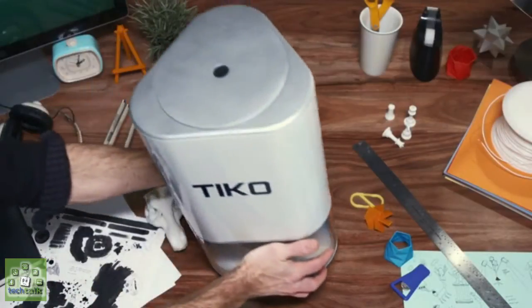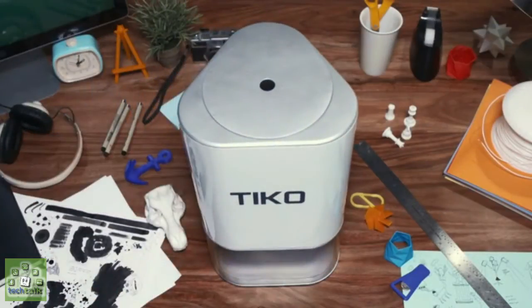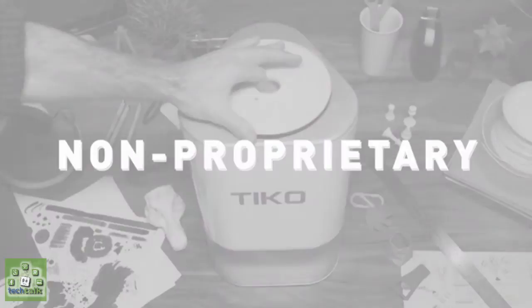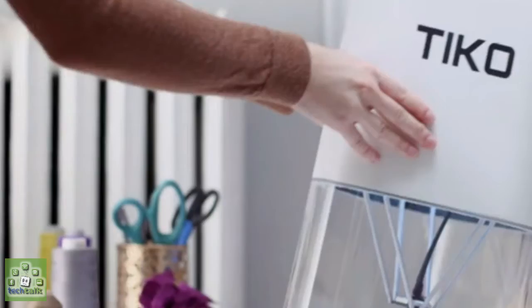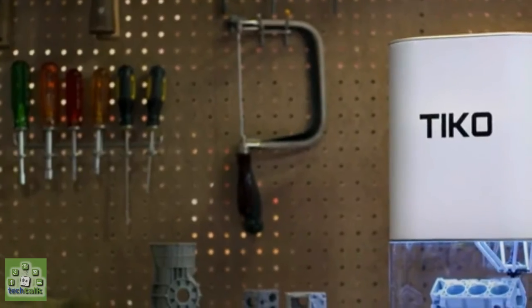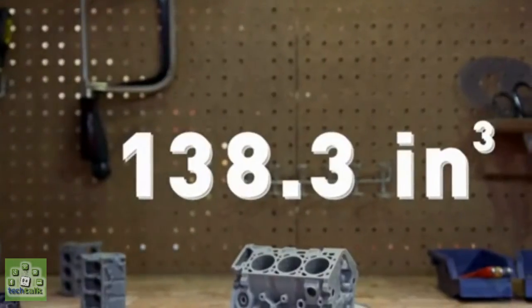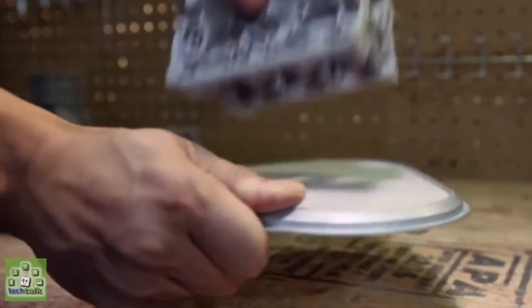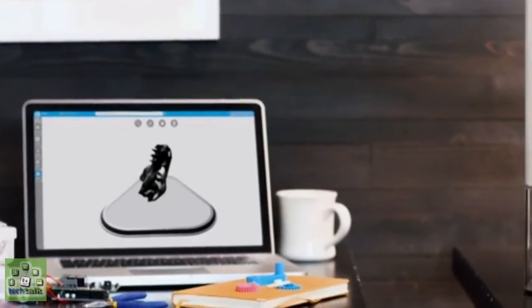You know what else is flexible? Your choice of filament. Tyco uses non-proprietary 1.75mm filament on a standard 1kg spool, 165mm in diameter, so you can experiment with different materials. Tyco also detects when you're out of filament and pauses the print so you can reload and resume.